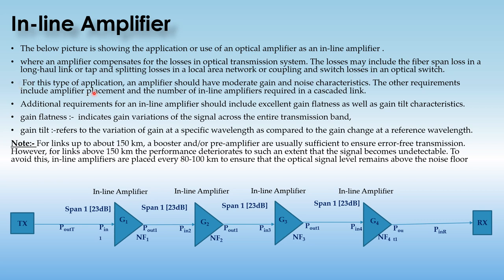For these types of application, an amplifier should have moderate gain and noise characteristics. Additional requirements include the amplifier placement and the number of inline amplifiers required in a cascaded link. The inline amplifier should also include excellent gain flatness as well as gain tilt characteristics. Gain flatness indicates the gain variation of the signal across the entire transmission band, while gain tilt refers to the variation of gain at a specific wavelength compared to gain changes at a reference wavelength.